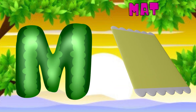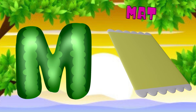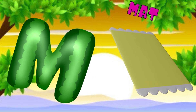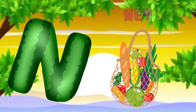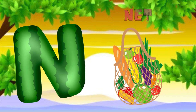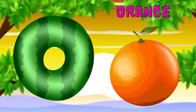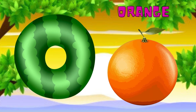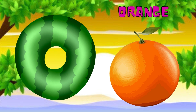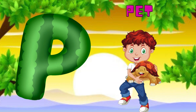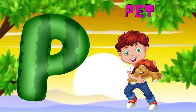M is for mat, m-m-mat. N is for net, n-n-net. O is for orange, o-o-orange. P is for pet, p-p-pet.